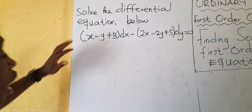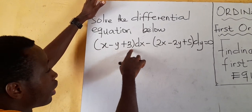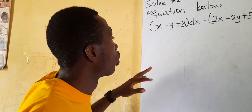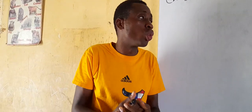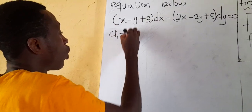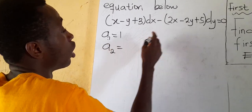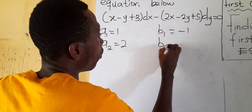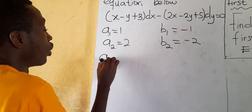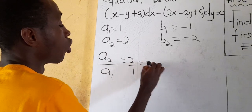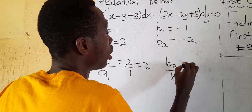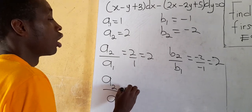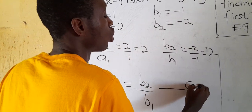We want to solve the first question: solve the differential equation (x minus y plus 3)dx minus (2x minus 2y plus 5)dy equals 0. This is non-homogeneous. We find a1 equals 1, a2 equals 2, b1 equals negative 1, b2 equals negative 2. So a2 over a1 is 2 over 1 equals 2, and b2 over b1 is negative 2 over negative 1 equals 2. Since they are equal, this is case 2.